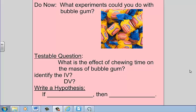So identify your independent variable and dependent variable. In this experiment, our independent variable is going to be the chewing time. The dependent variable is the mass of the bubblegum because that's what we're measuring. We're changing the amount of chewing time and we're measuring the mass of the bubblegum.